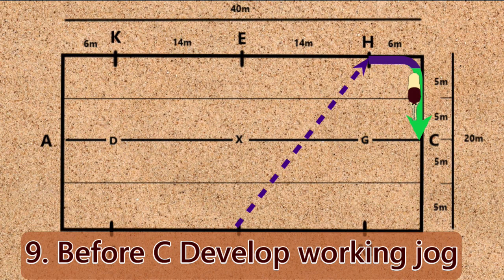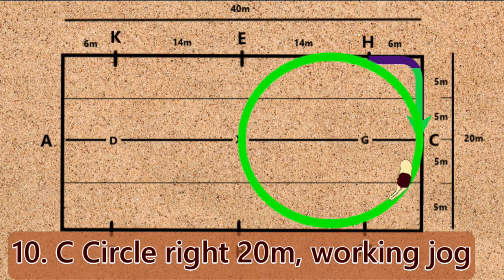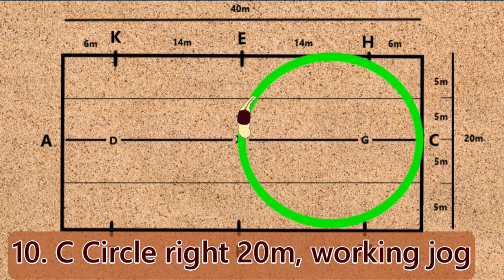Movement 9: Before C, develop working jog. Movement 10: C, circle right 20 meters working jog.